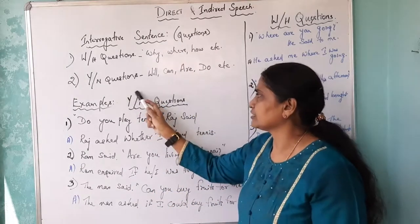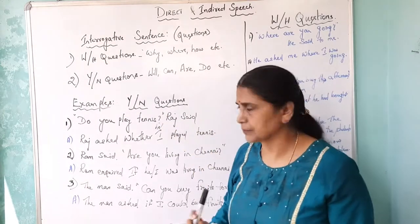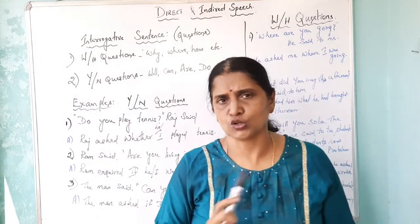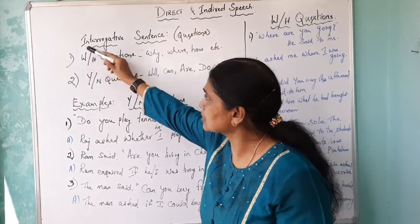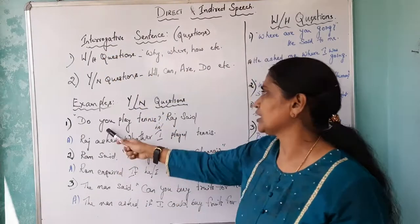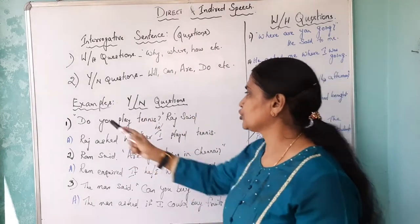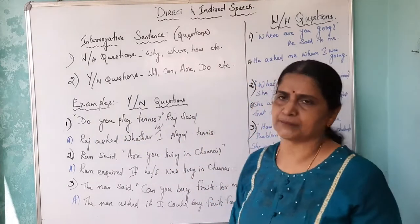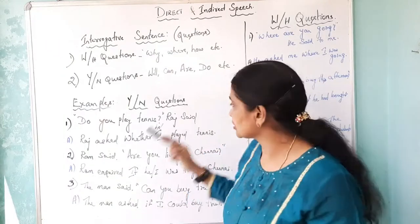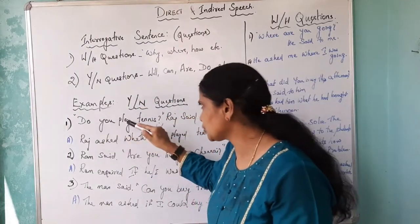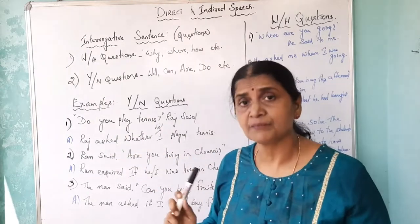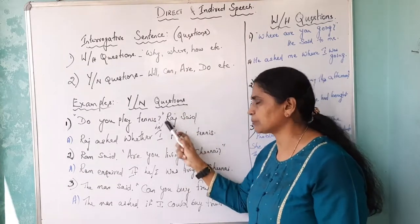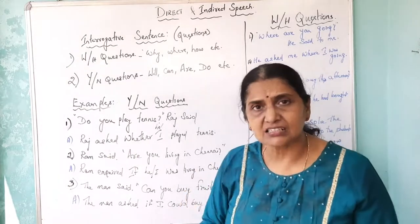Let's deal with Yes/No questions first. 'Do you play tennis?' — what will be your answer? Either yes or no, and it is not framed with W or H, so we call it a Yes/No question. 'Do you play tennis?' — Raj said this, so these are the words of Raj in direct speech. Now we have to convert this sentence into indirect speech. Who is the speaker? Raj. So, Raj asked.